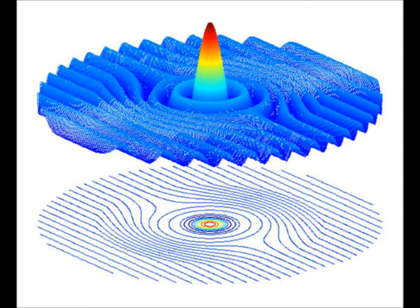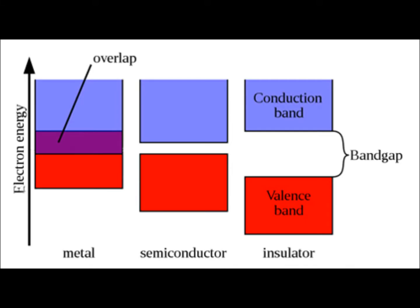The de Broglie hypothesis states that all matter can act as a wave with a certain momentum and wavelength. This increase in band gap causes a blue shift in the light emitted when the material is exposed to a light source, due to the increased energy needed to cross the band gap. Band gap increase is also responsible for making nanoparticles less conductive than their bulk-scale counterparts.